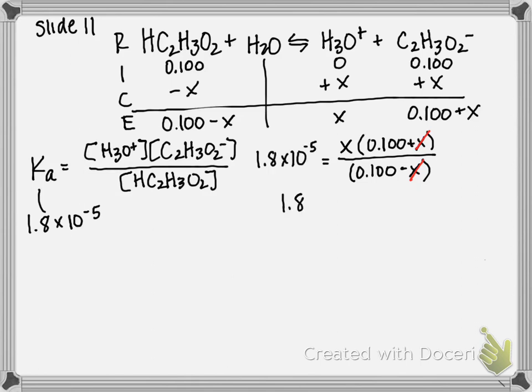Since we have 0.100 on both the top and the bottom we can actually cancel both of those values out until we are left with the fact that x is equal to our 1.8 times 10 to the negative 5.